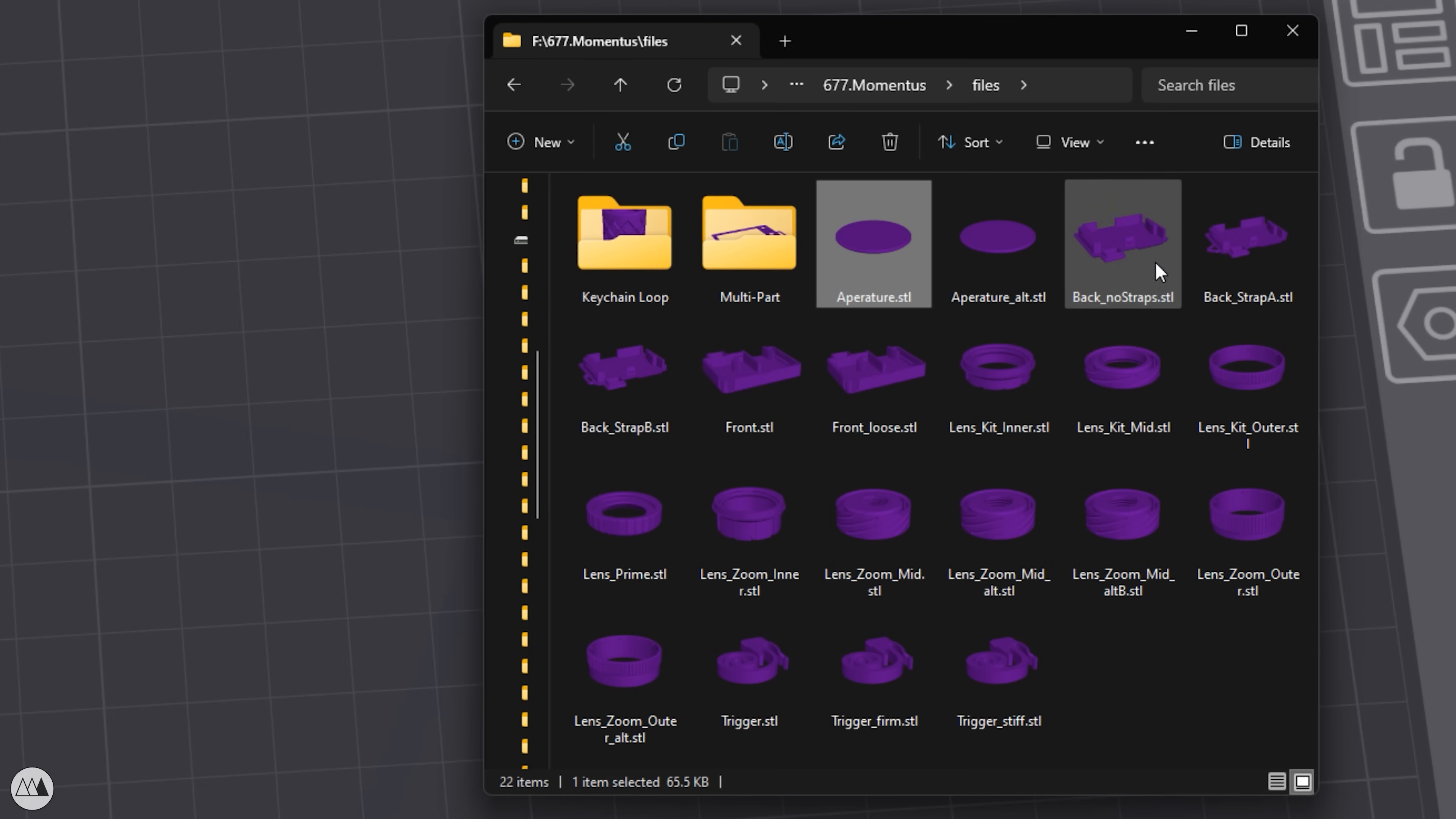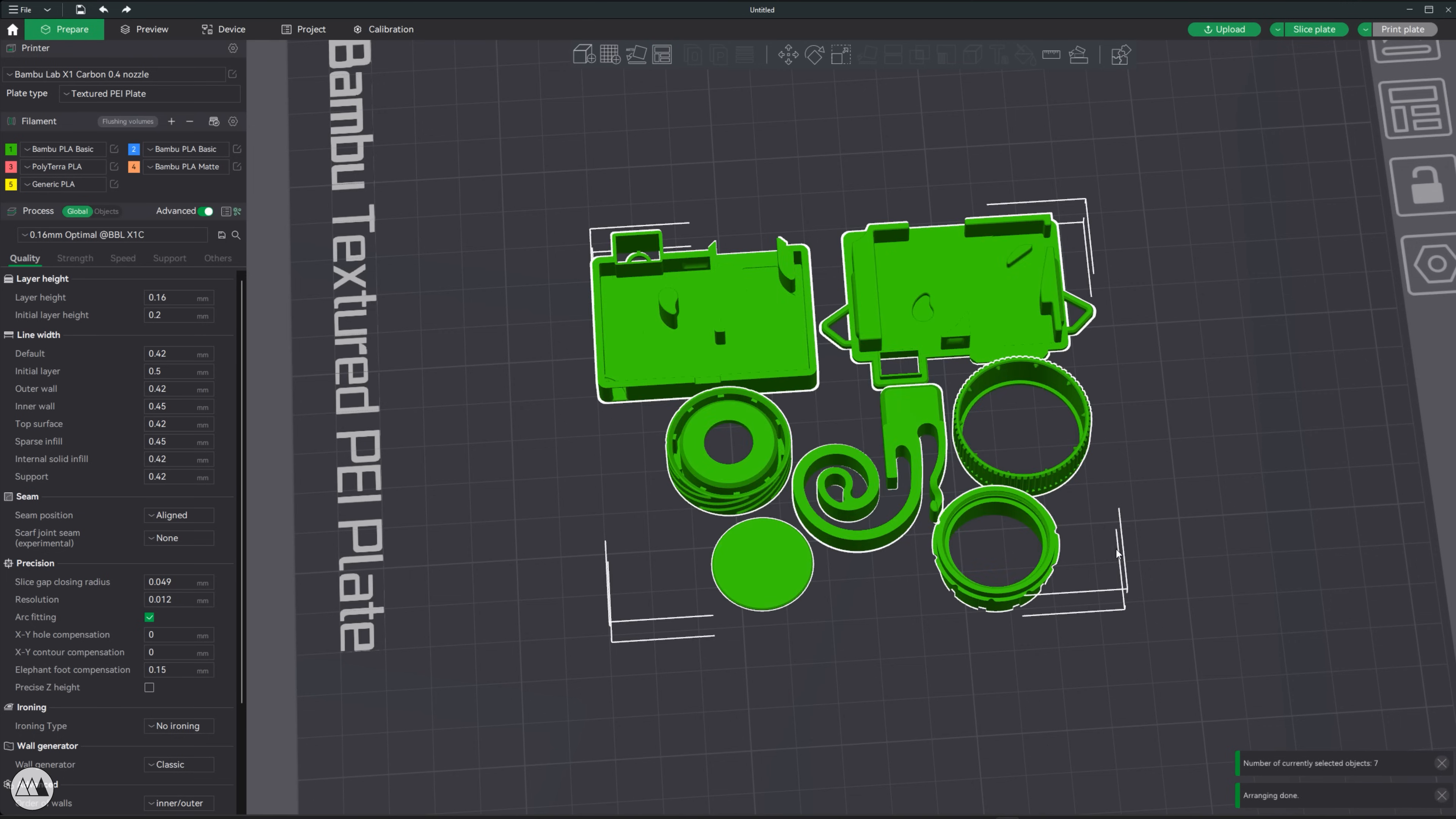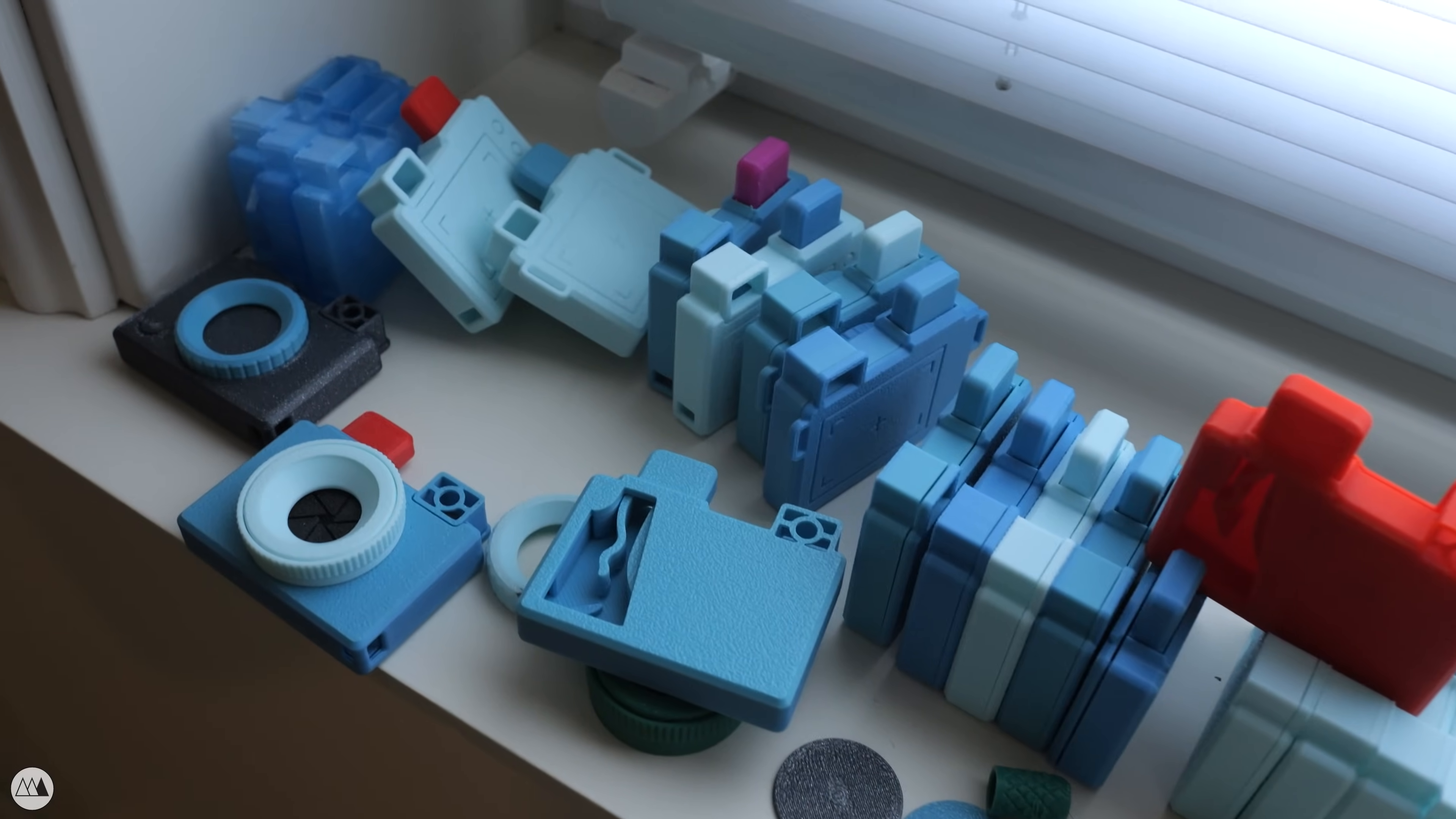So I'll select my preferred parts, the whole shebang with strap connectors and the big zoom lens, and I'll bring those into my slicer. I went through a lot of prototypes to make these files easy to print, so your best default print settings should do.